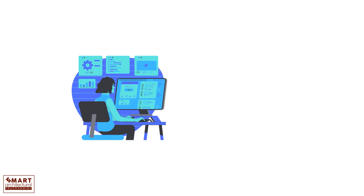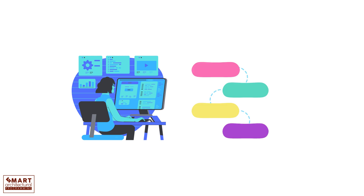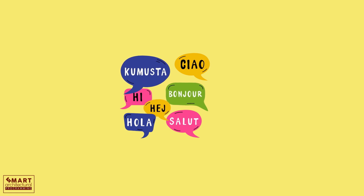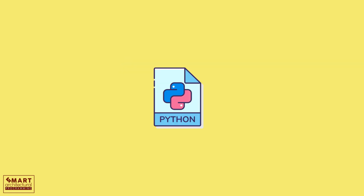Programming is like teaching a computer to do your bidding. Think of it as giving step-by-step instructions, like a recipe for a computer to follow. We use a programming language to write these instructions. One popular language is Python — it's easy to read and write, making it perfect for beginners.